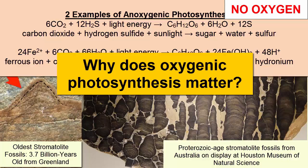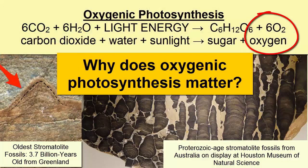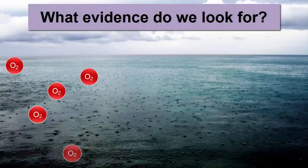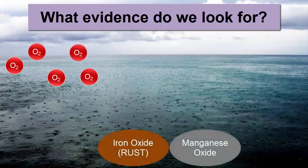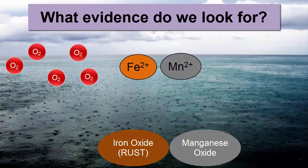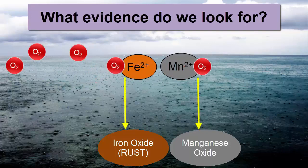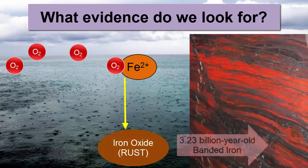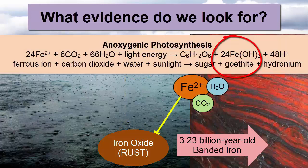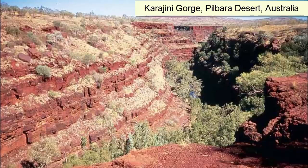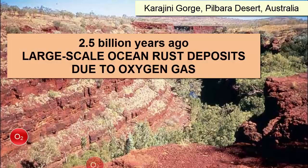Why does the evolution of oxygenic photosynthesis matter? Advanced life can evolve only in the presence of large amounts of atmospheric oxygen, and oxygenic photosynthesis is the dominant natural process at work on Earth that produces that oxygen. What evidence would we look for to tell us oxygenic photosynthesis had evolved? Minerals such as manganese or iron oxides that form through chemical reactions between oxygen gas and either dissolved metals in the oceans or metals in weathering surface rocks on land. While as far back as 3.23 billion years ago there appeared to be small localized precipitations of iron oxide minerals on the seafloor, now visible in layered rocks known as banded iron formations, additional evidence suggests those were formed as a byproduct of anoxygenic photosynthesis by bacteria that used iron as an electron donor.